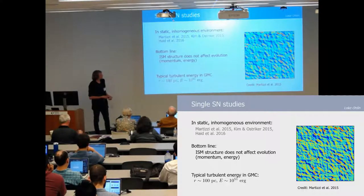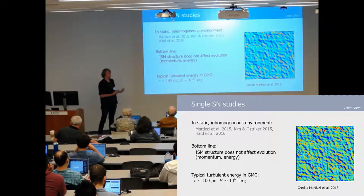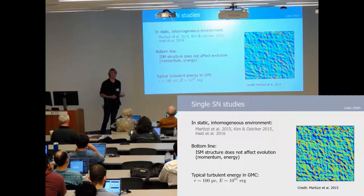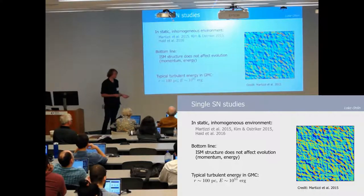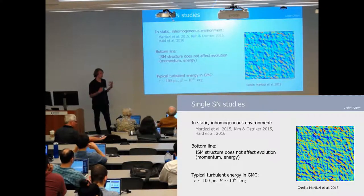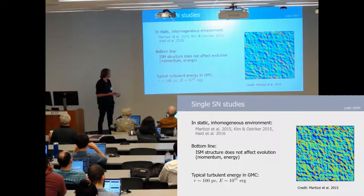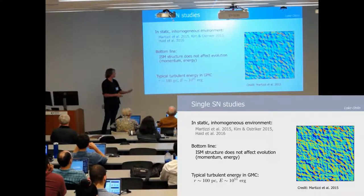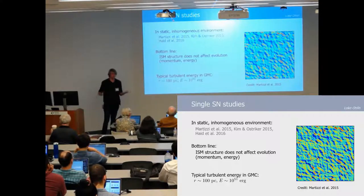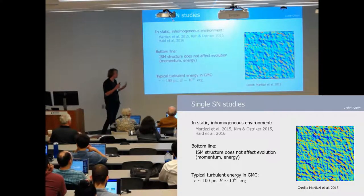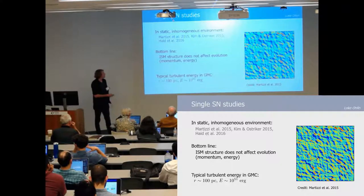However, we thought something was missing from this picture and that is that the gas in the simulations was mostly static. So we want to look at turbulent gas. If we do some simple calculations, you can see that from a GMC-like cloud of 100 parsecs you have a turbulent energy of roughly 10 to the 51 ergs, which in comparison is roughly the energy of a typical supernova.